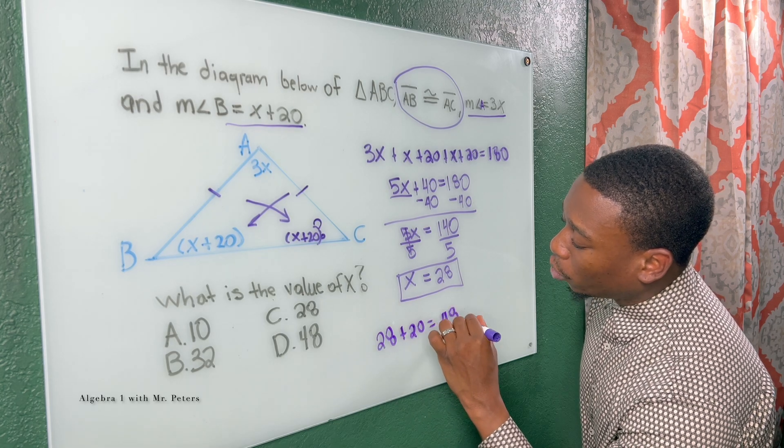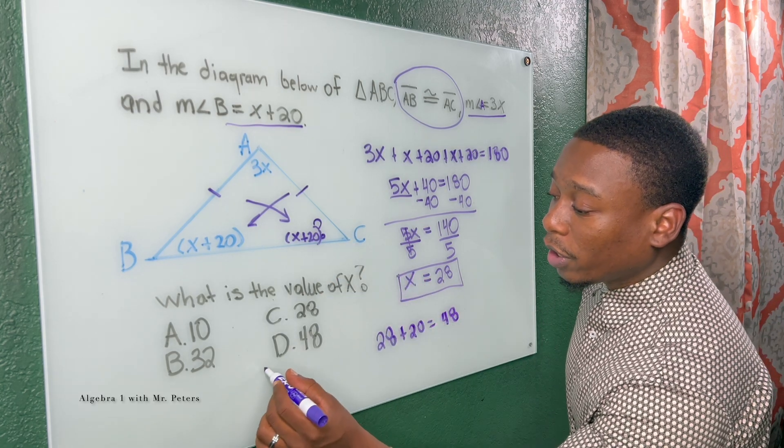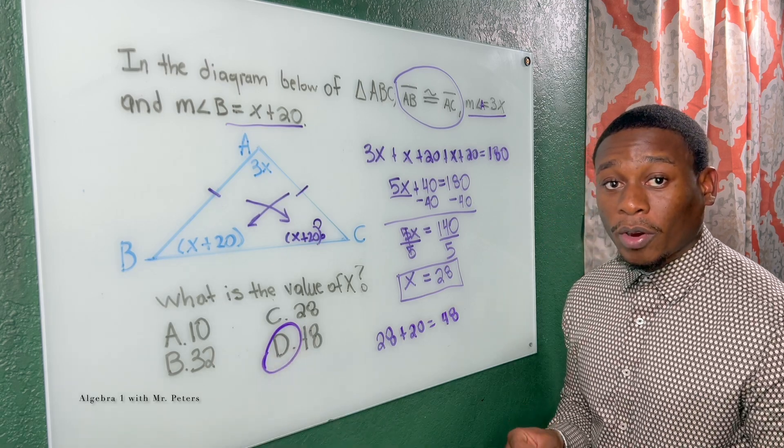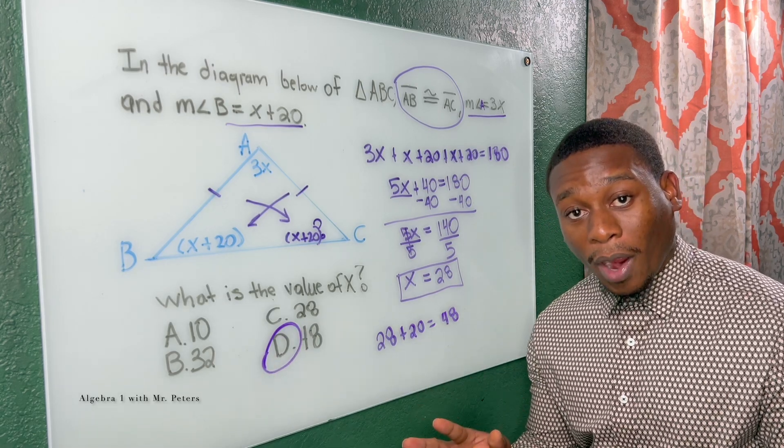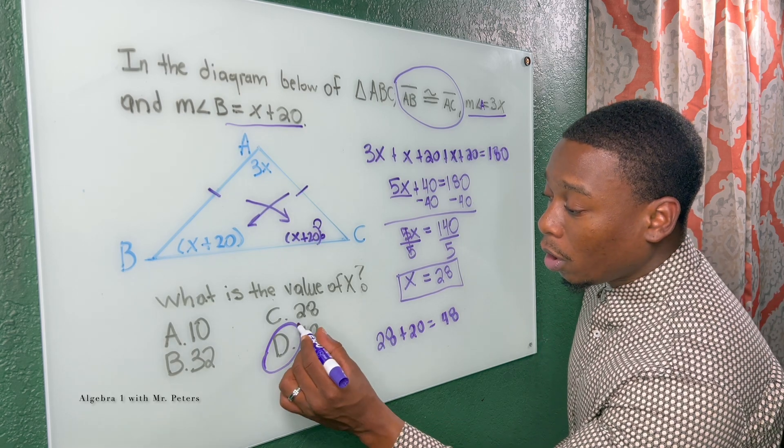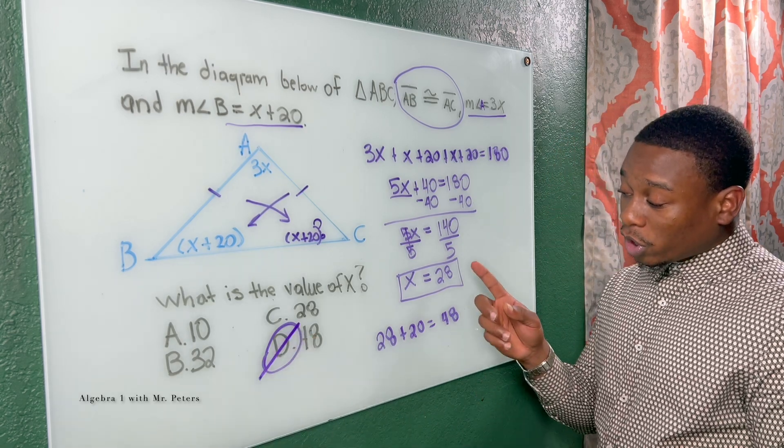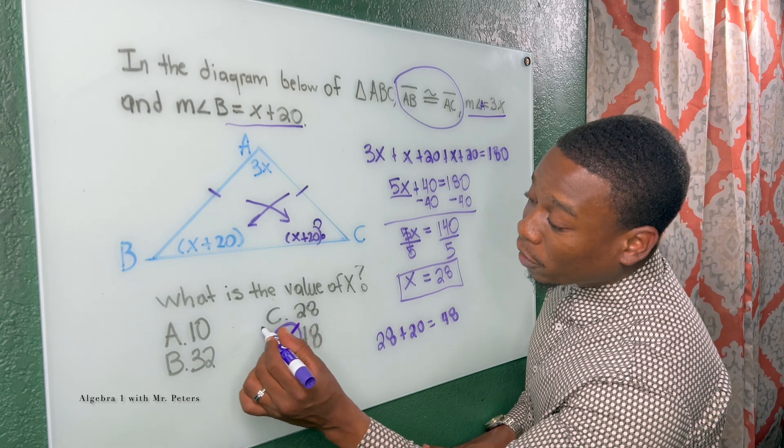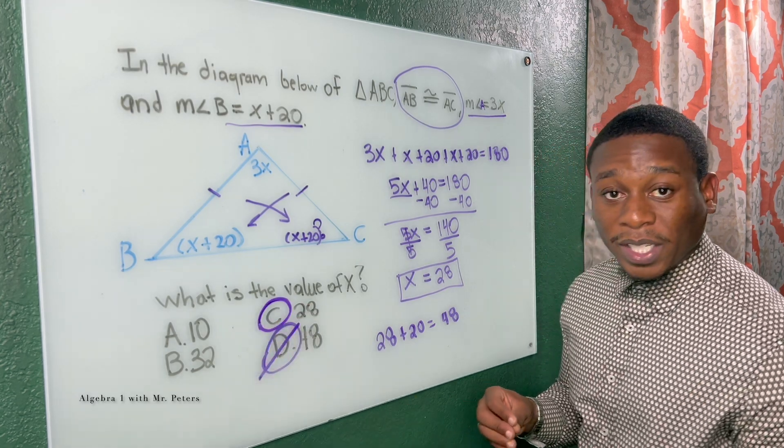So a lot of students will come in now and plug in 28 for X, and they'll say, okay, the angle is 48 degrees, and they'll come and say, hey, D is the correct answer, which would be right if they asked us for the angle. But what they asked us for was just the value of X. So our correct answer would be C.